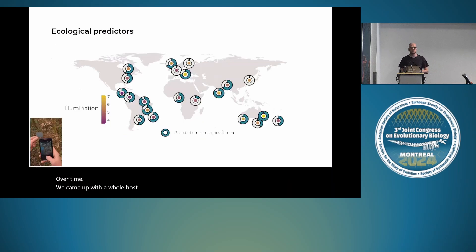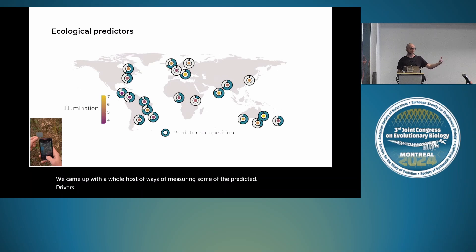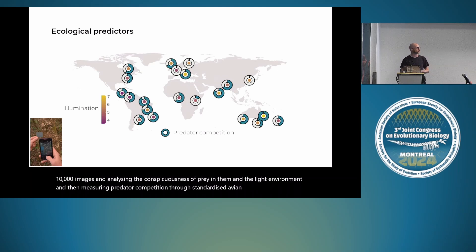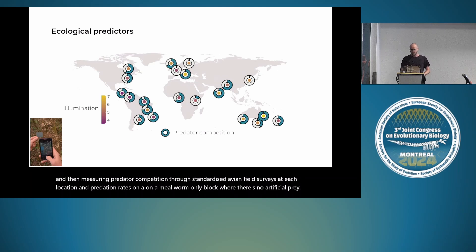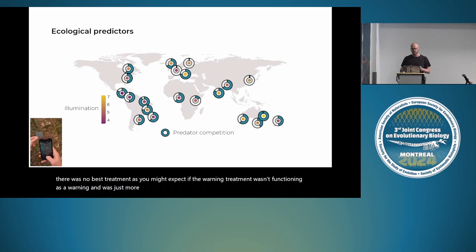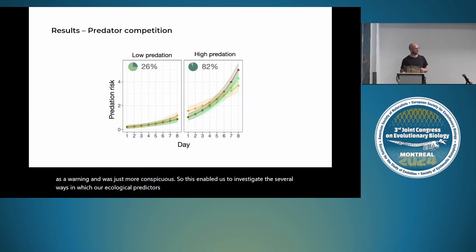We measured ecological drivers through approximately 10,000 images analyzed for prey conspicuousness and light environment, standardized avian field surveys at each location for predator competition, and predation rates on a mealworm-only block with no artificial prey. Across the whole experiment, we observed about 3,500 avian attacks on prey, and there was no single best treatment—as you might expect if the warning treatment was functioning as a genuine warning signal rather than just being more conspicuous.